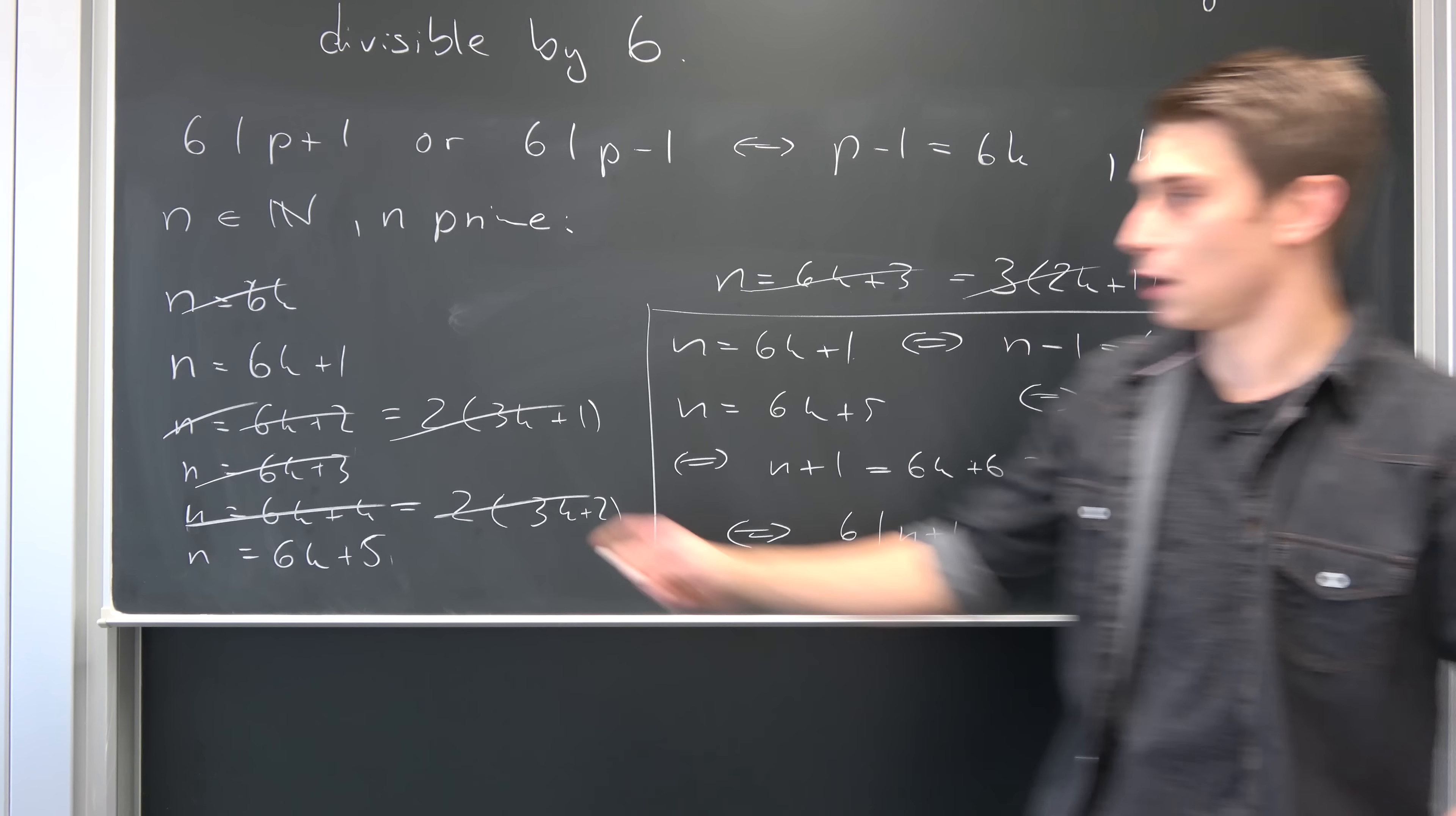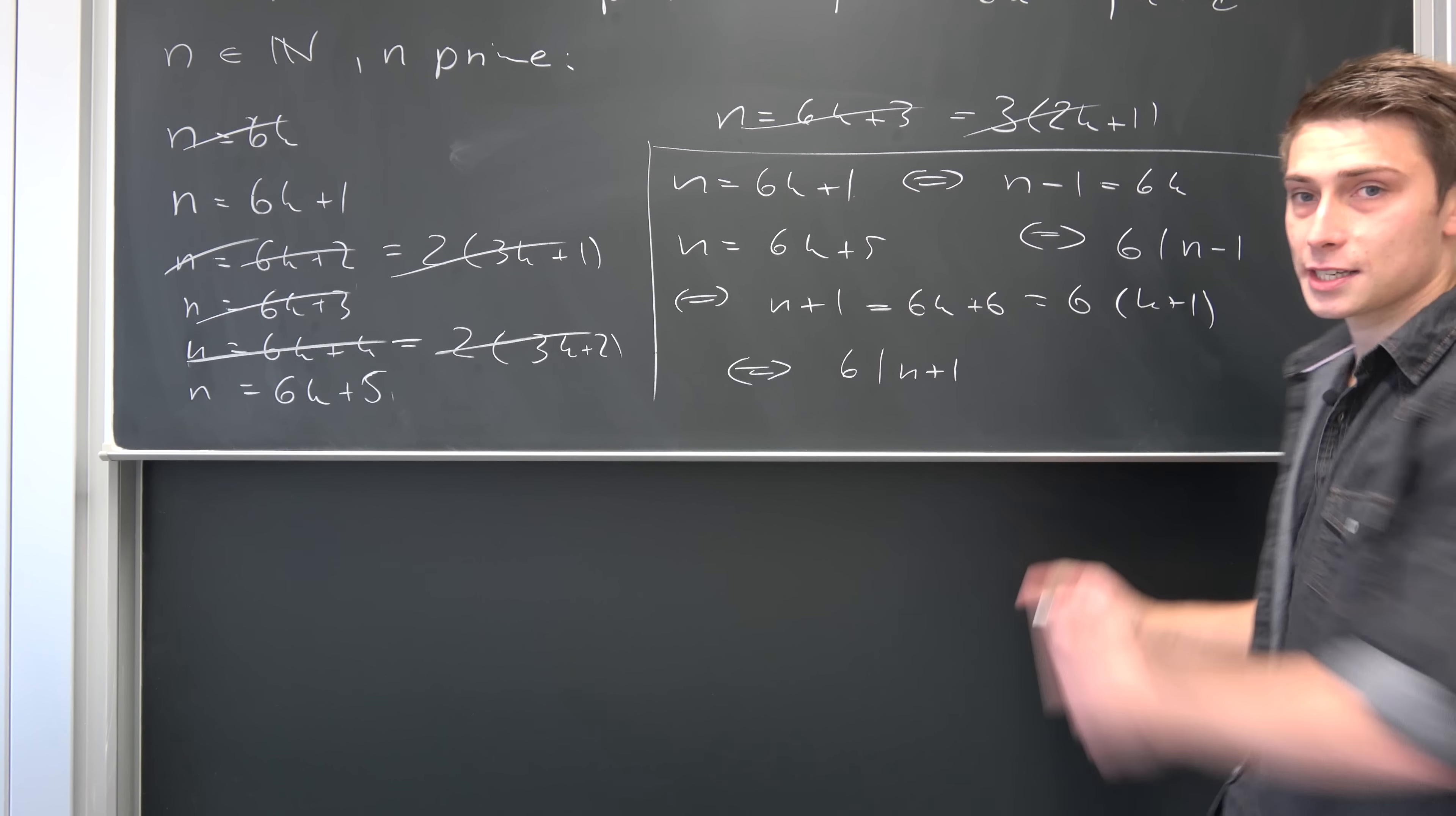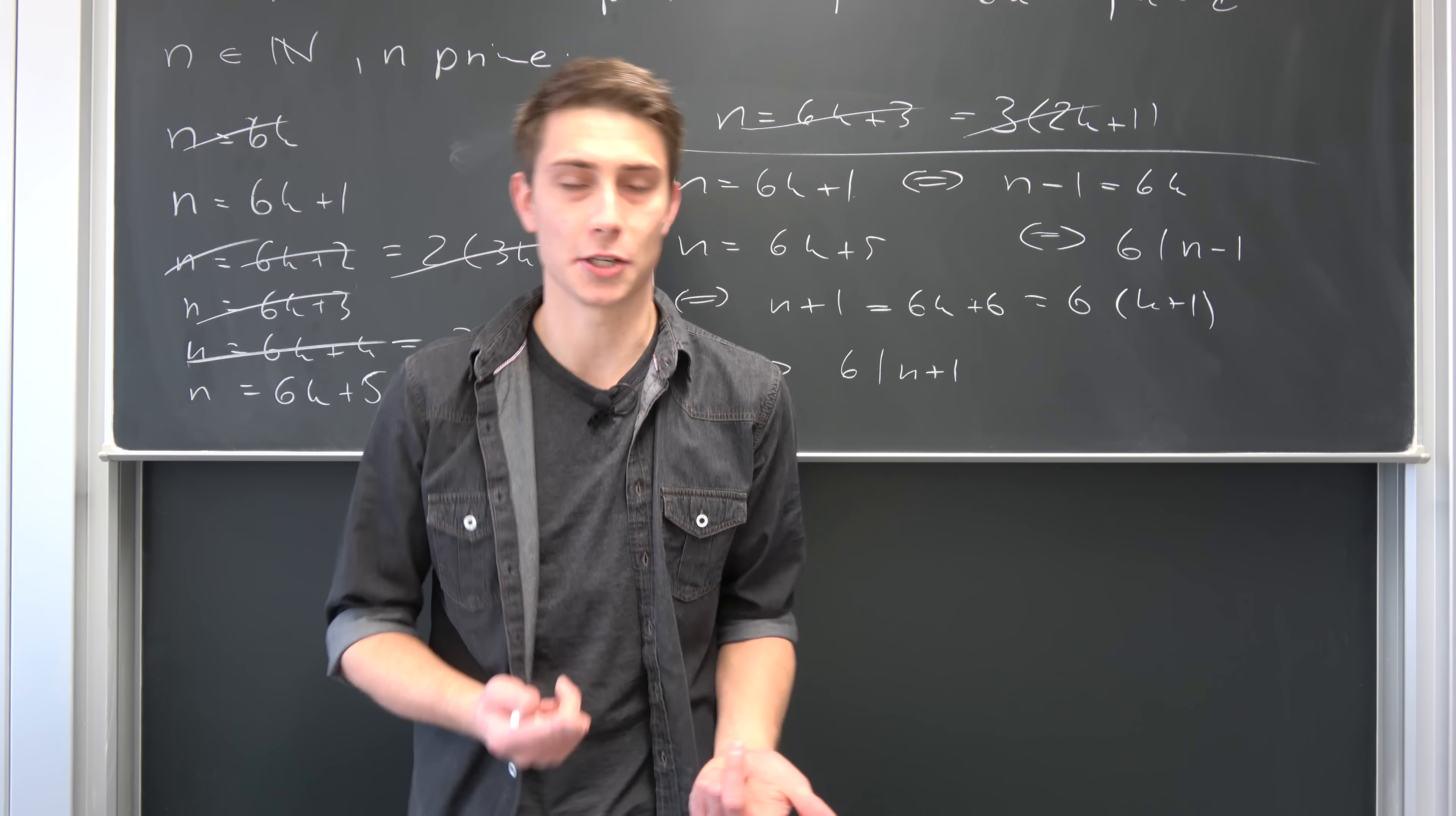And this is basically it. We have shown that there are only two cases which could apply to prime numbers: either 6 divides n plus 1, or 6 divides n minus 1. For example 5, it's 6 minus 1.